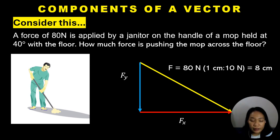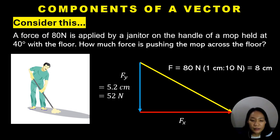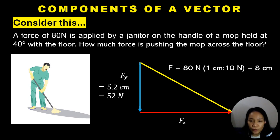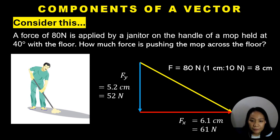If you follow the graphical method, you simply use your ruler and measure the length of the x and y components. For example, the vertical component measured manually gives about 5.2 centimeters. Since 1 centimeter equals 10 newtons, 5.2 centimeters equals 52 newtons. For the x-axis, measuring again gives 6.1 centimeters, or 61 newtons.